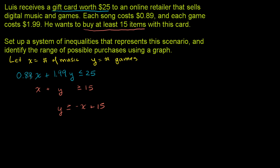For the first equation, if we subtract 0.89x from both sides, we get 1.99y ≤ -0.89x + 25. Then divide both sides by 1.99. The calculator will be useful for this. Negative 0.89 divided by 1.99 is equal to negative 0.447.